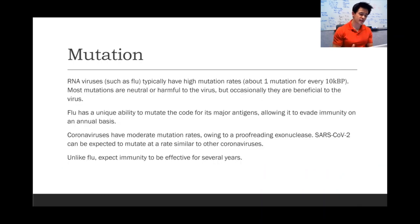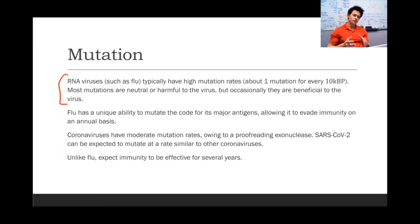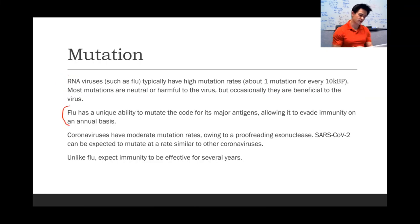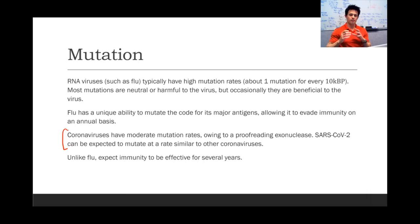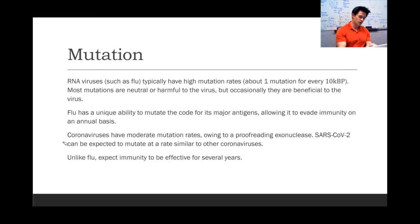On the topic of mutation: RNA viruses like the flu typically have high mutation rates, about one mutation for every 10,000 base pairs. Most mutations are neutral or harmful to the virus, but occasionally a beneficial one emerges. The flu has a unique ability to mutate the code describing its major antigens, allowing it to evade immunity annually. Coronaviruses are also RNA viruses but have more moderate mutation rates owing to a proofreading exonuclease. SARS-CoV-2 can be expected to mutate at a rate similar to other coronaviruses, so unlike the flu, immunity should be effective for several years.